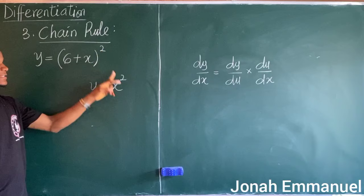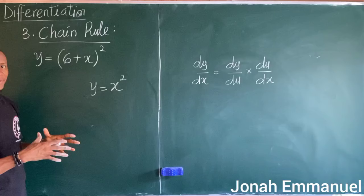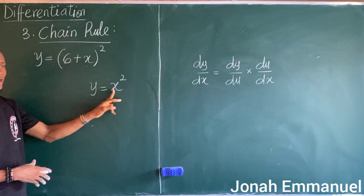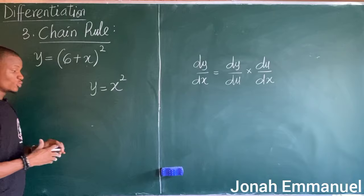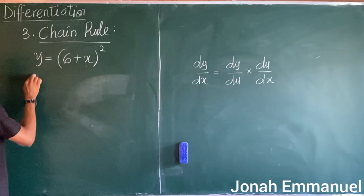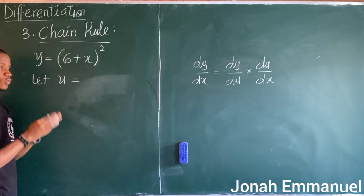The reason is that in this case I have a much more complex situation. This was a single term to the power 2, but this is now a double term to the power 2. So the approach will now be to use chain rule.